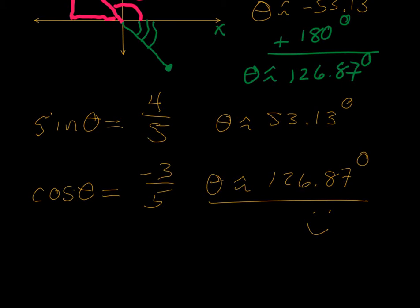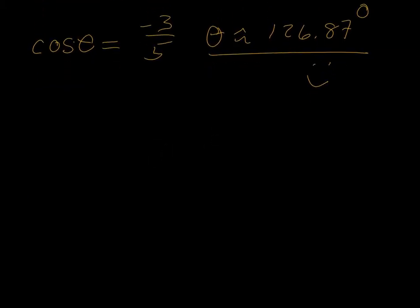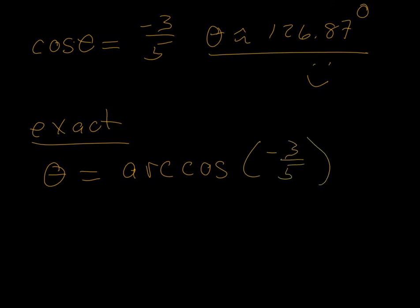Now my students know that if we're not using calculators, you need some form of an exact answer. That's how we might leave it on an exam or a quiz question if we weren't using technology that particular time. So some exact answers: we can see that the inverse cosine of negative three-fifths was an exact answer, and my students know that they're welcome to use the inverse notation if they wish to.